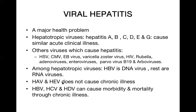Hepatitis A and hepatitis E do not cause chronic illness. They cause acute illness and either the patient completely recovers or the patient dies — there is no middle way. Hepatitis B, C, and D can cause morbidity and mortality through chronic illness. Hepatitis B and C can lead to chronic liver disease and cirrhosis of the liver.